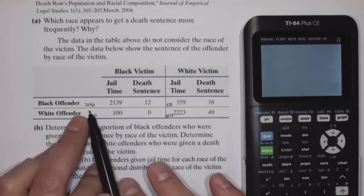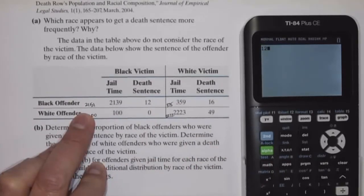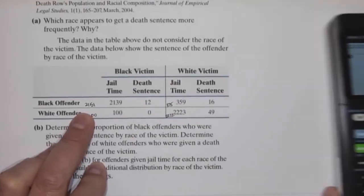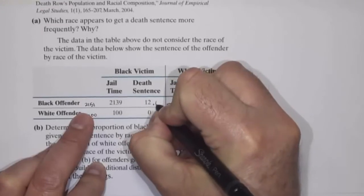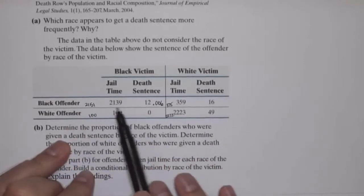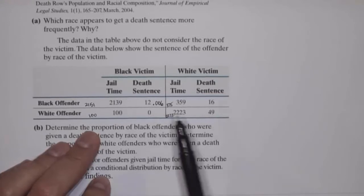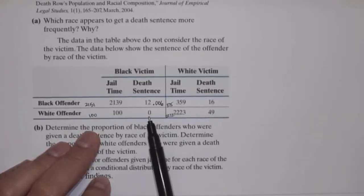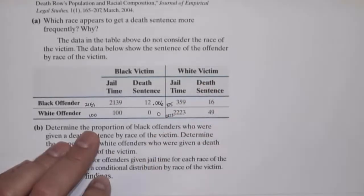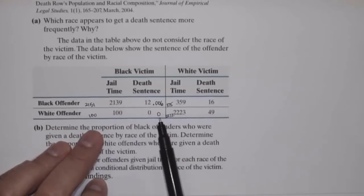Of the 2,151 black offenders where the victim was black, 12 got the death penalty. So 12 divided by 2,151 is 0.006 — a relative frequency of 0.006, meaning about 0.6% of the time. For white offenders where the victim was black, that would be 0 divided by 100, so 0% of the time.